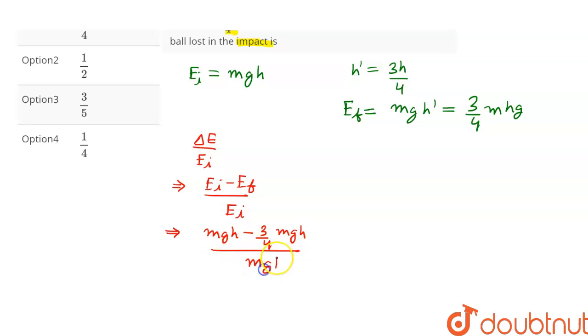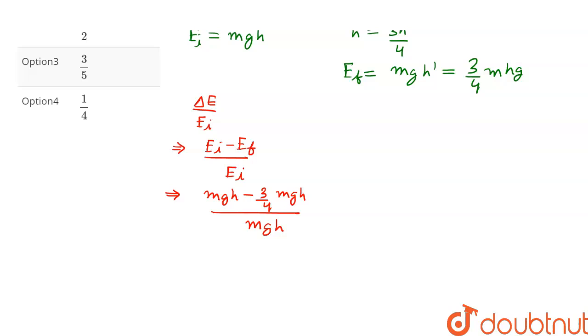by mgh. Let's take mgh common from the numerator. So this will be mgh times (1 minus 3/4) divided by mgh. This gets cancelled.